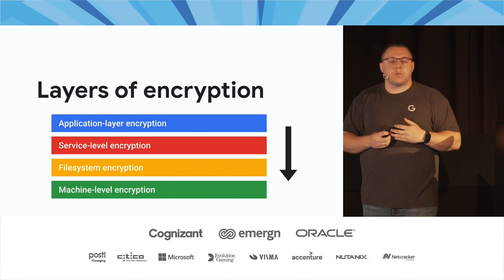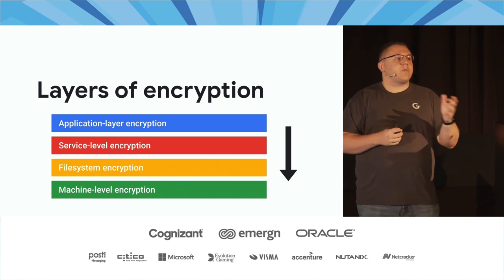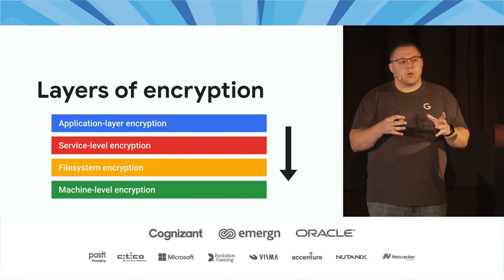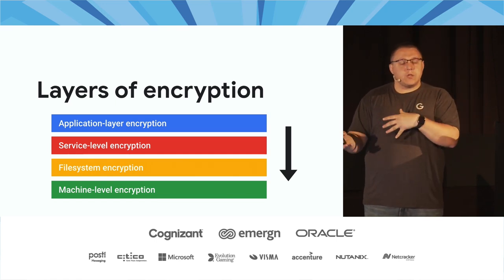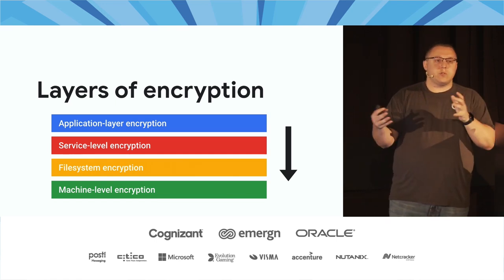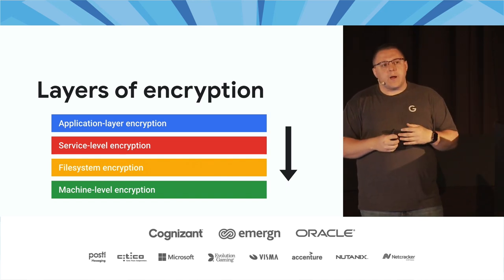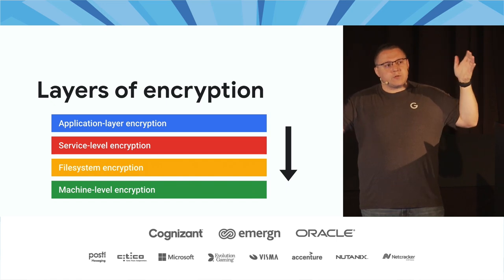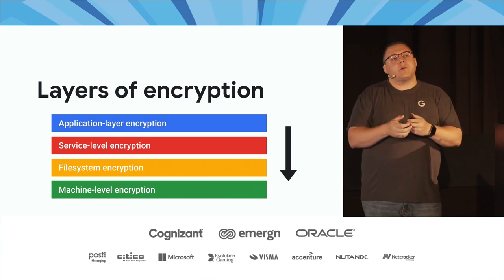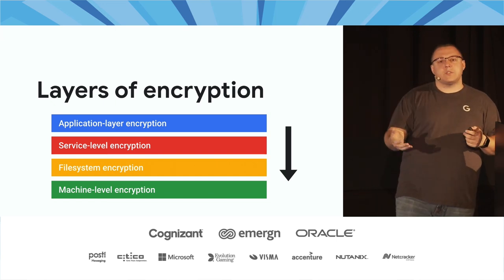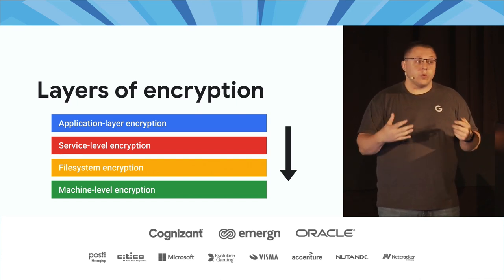You might be familiar with machine-level encryption. For example, on an Apple device you might use FileVault — full disk encryption — where one key encrypts the entire hard drive, stored in your keychain. When you enter your password, it decrypts the drive. On Windows, this is called BitLocker. If someone yanks out your hard drive, all the data is encrypted and they can't access the plaintext without knowing the key or brute-forcing it.